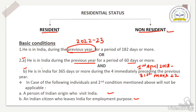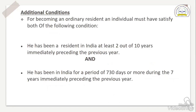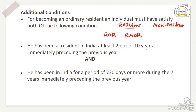If anyone is satisfying this basic condition, he will be treated as resident. Once treated as resident, we go to see additional conditions. For becoming an ordinary resident, an individual must satisfy both of the following conditions. There are two parts: resident and non-resident. Within resident there are three categories: ROR and RNOR. If any resident is satisfying both conditions, he will be treated as ROR. If satisfying only one condition, he will be treated as RNOR. The first additional condition is: he has been a resident in India for at least two out of ten years immediately preceding the previous year.